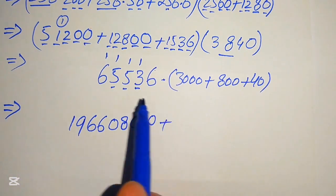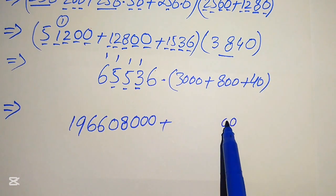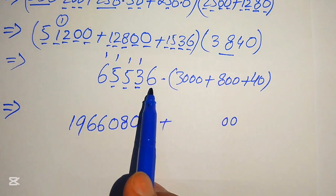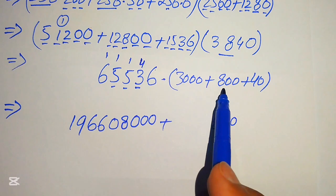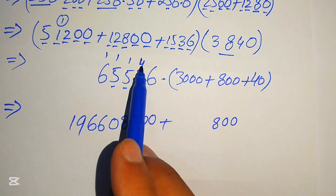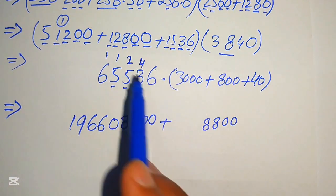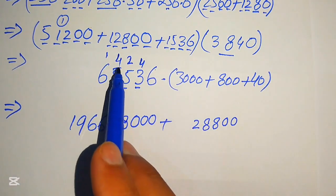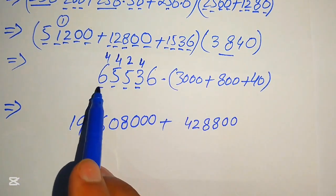For 65,536 times 800, we write two zeros and multiply by 8: 8 times 6 is 48, write 8 carry 4; 8 times 3 is 24, plus 4 is 28, write 8 carry 2; 8 times 5 is 40, plus 2 is 42, write 2 carry 4; 8 times 5 is 40, plus 4 is 44, write 4 carry 4.